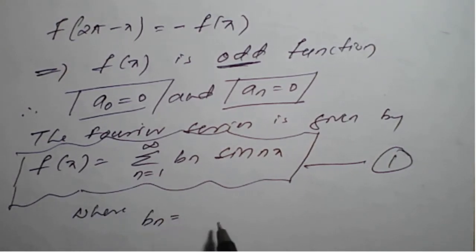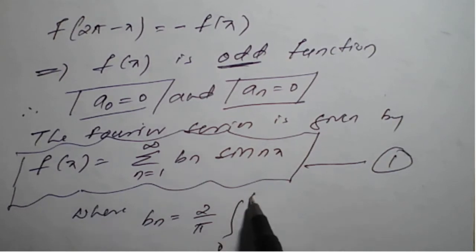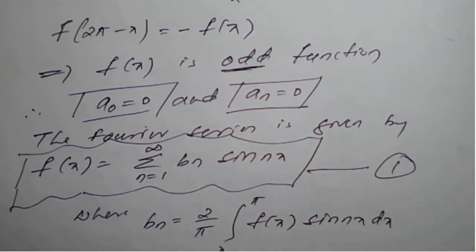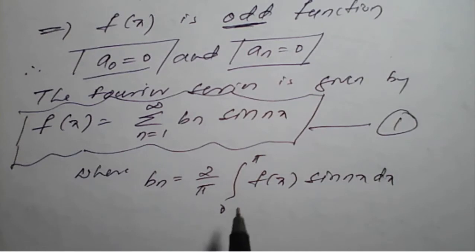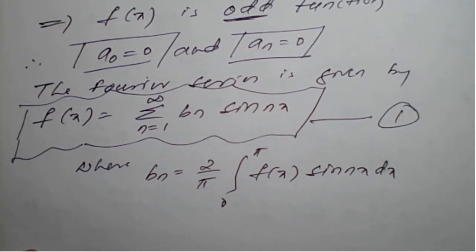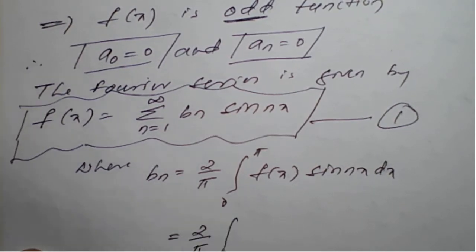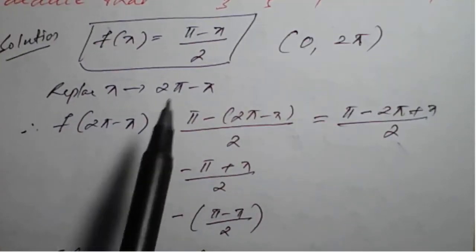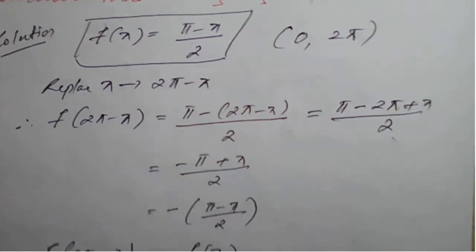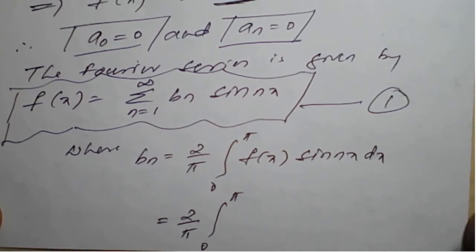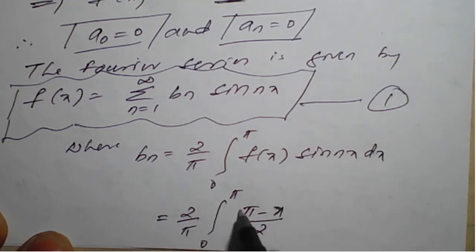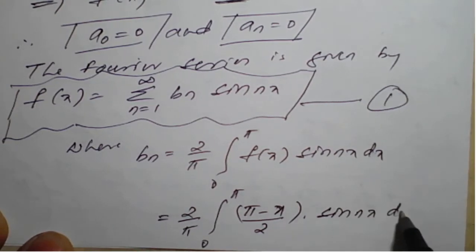Where bₙ is nothing but (2/π) ∫₀^π f(x) sin(nx) dx. We need to simplify this integral by applying the value of f(x). Substituting f(x) = (π - x)/2, we get bₙ = (2/π) ∫₀^π (π - x)/2 · sin(nx) dx.